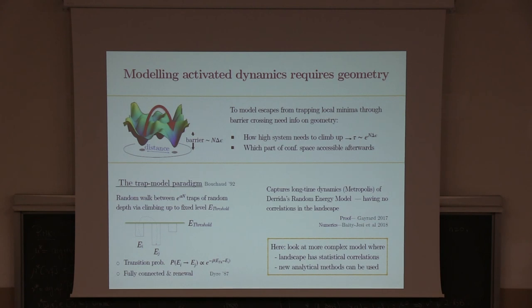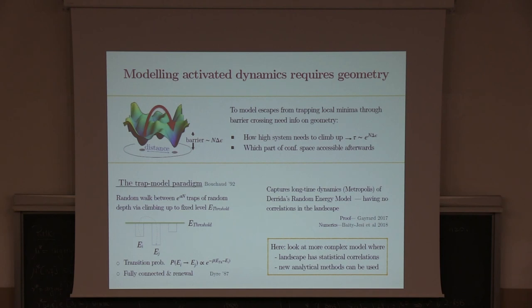If these distributions are known, one can derive effective models for these dynamics. Perhaps the best known is the Bouchaud trap model, where one simplifies configuration space to a collection of traps representing local minima with randomly distributed depth. The dynamics is a random walk between these traps with transition rates that depend only on the energy of the departing trap. The picture is that the system is confined in a local minimum and, to escape, has to climb up to some fixed value called the threshold, irrespectively of the depth of the minimum. Once up there, all configuration space is accessible — the space of traps is fully connected.